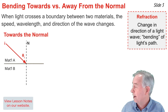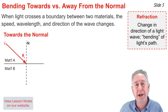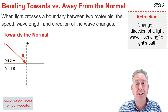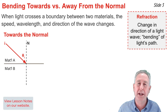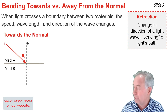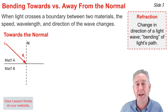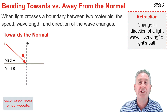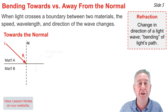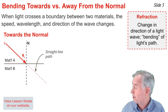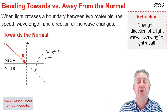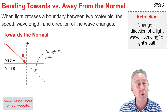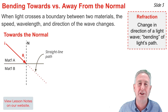In this ray diagram, the incident wave is represented by a red incident ray traveling through material A and approaching the boundary with material B. When it reaches the boundary, it will not travel along the straight line path, but instead will refract in one of two directions.